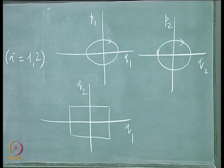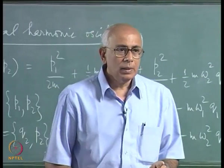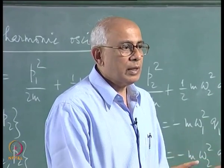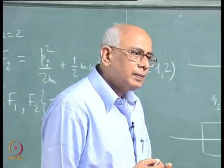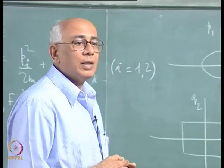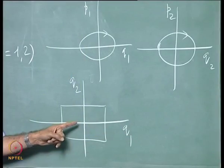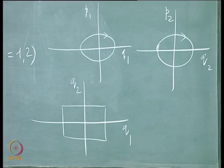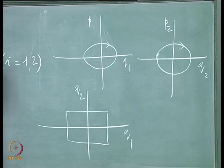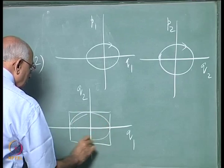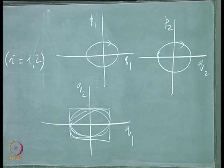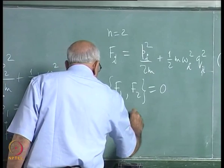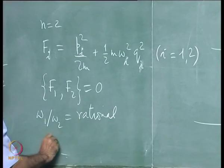It depends on the ratio ω1 to ω2. If the ratio is rational, meaning the two periods are commensurate — one is a rational multiple of the other — then the overall motion is periodic and the system will return to its original point. In general you get Lissajous figures, and the question is whether the figure closes on itself or fills up the space completely, depending on the frequency ratio.